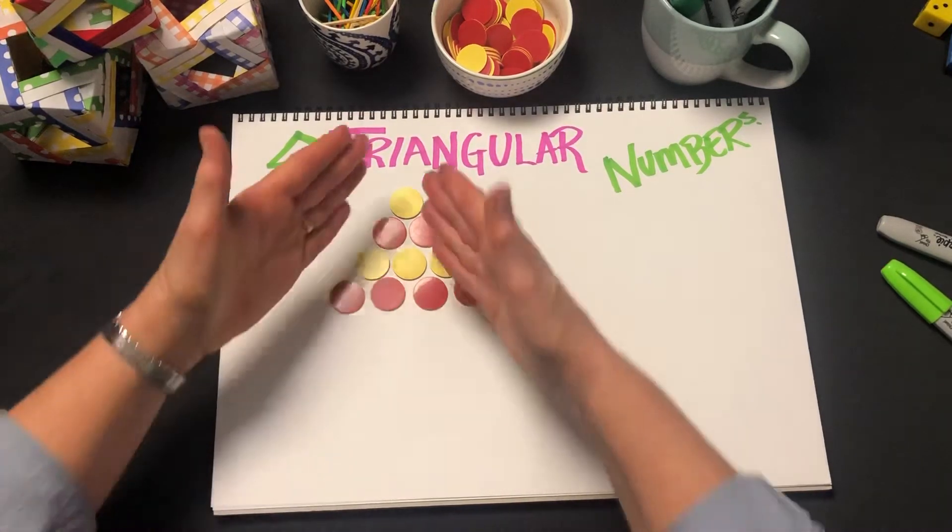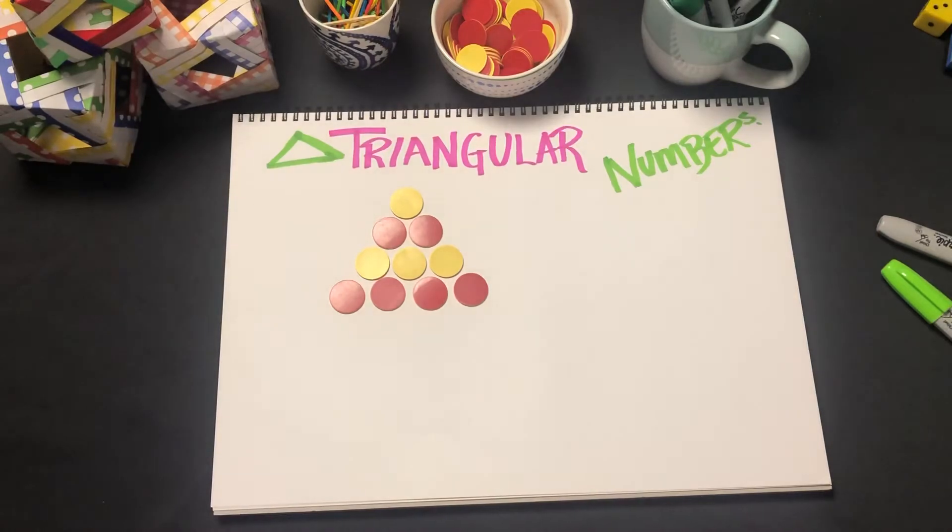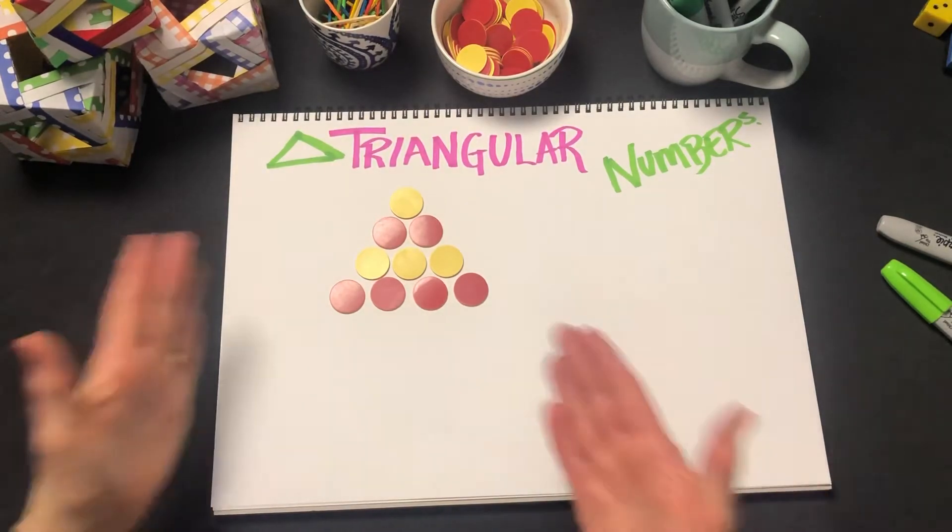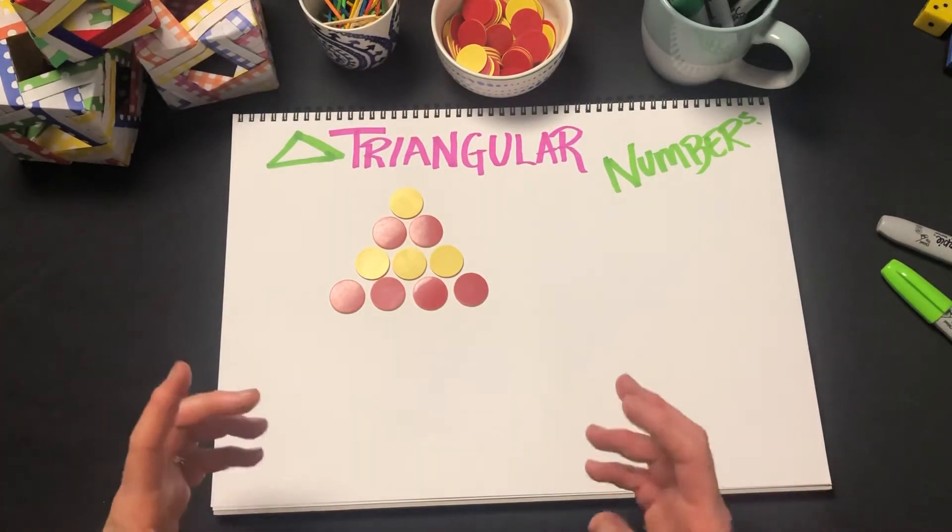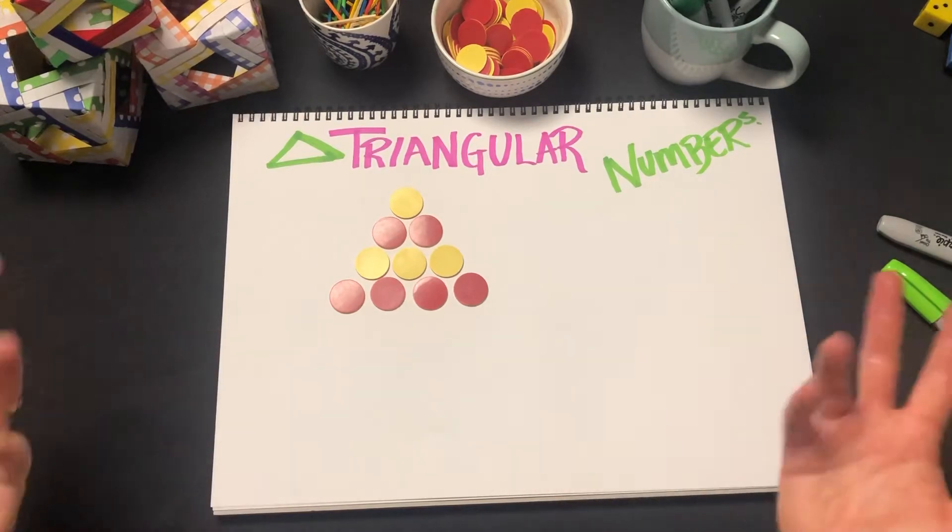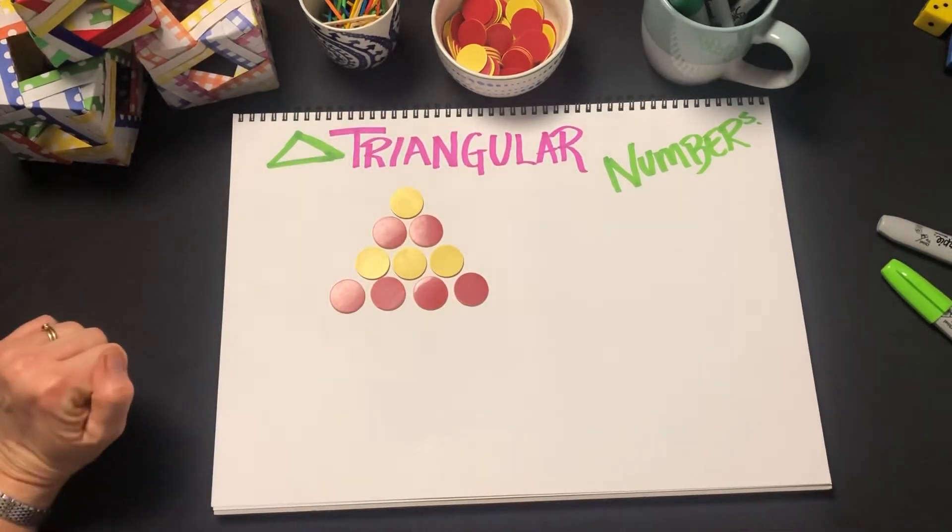You might start to see arrangements that you may come across every day, things like ten-pin bowling pins, snooker balls, pool balls. We form them in the shape of a triangle.